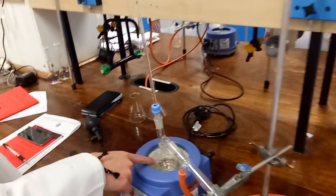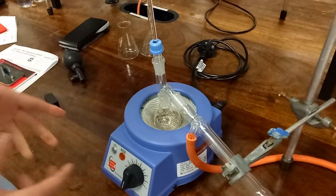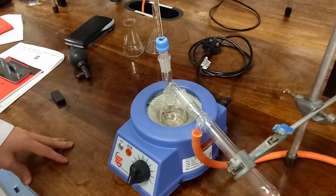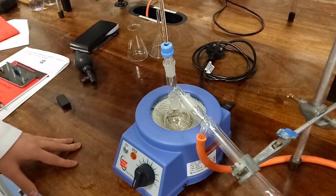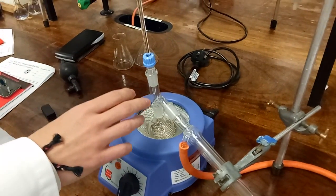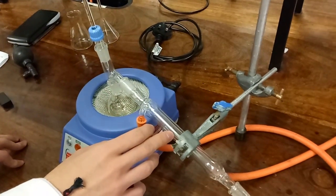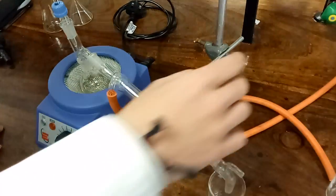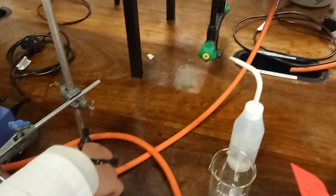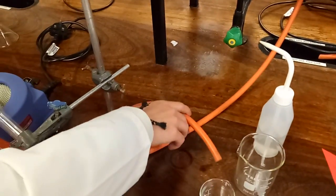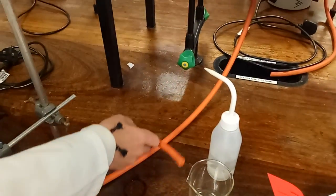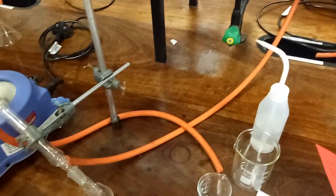In this flask here, you have the solution that you want to separate with various fractions in. It's connected to the Liebig condenser. You have two tubes, one going to the cold water tap and the other going to the sink. This tube isn't long enough, but normally it would be in the sink.